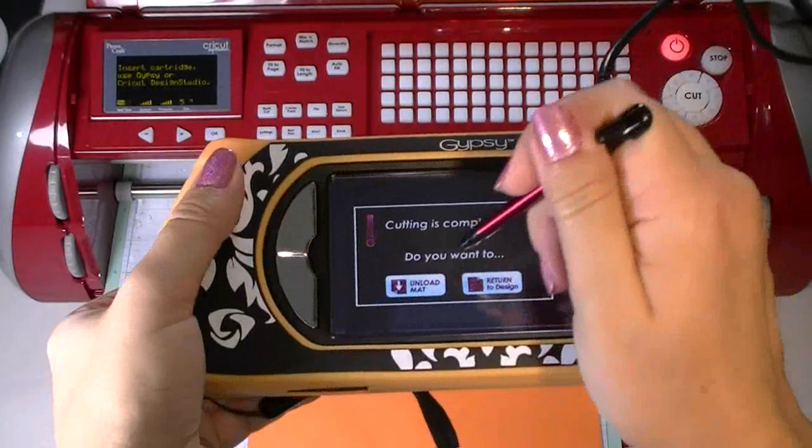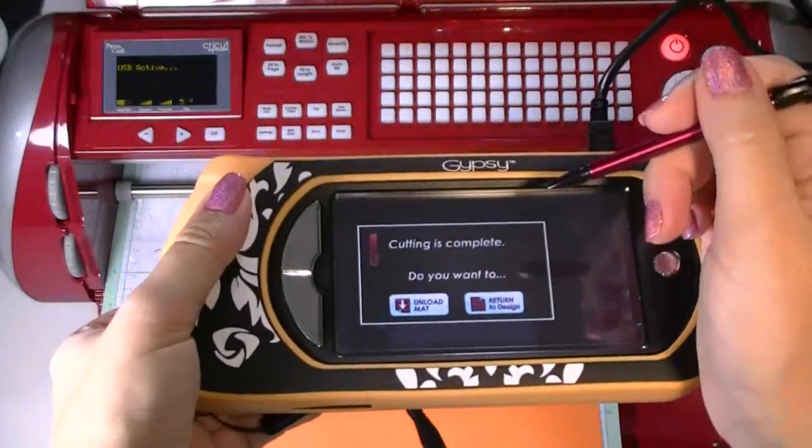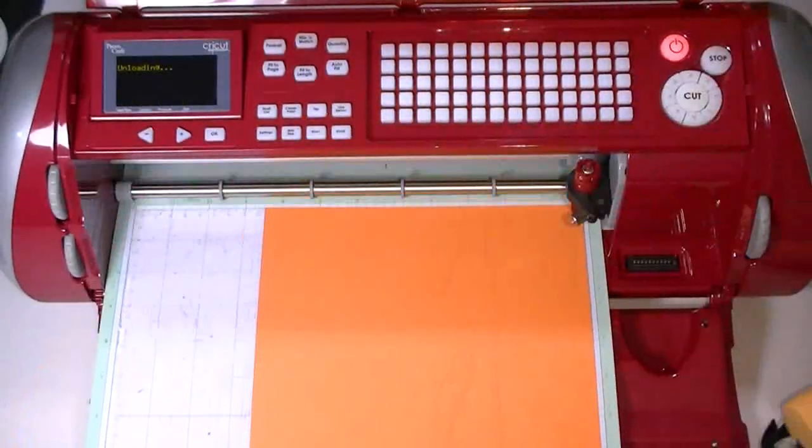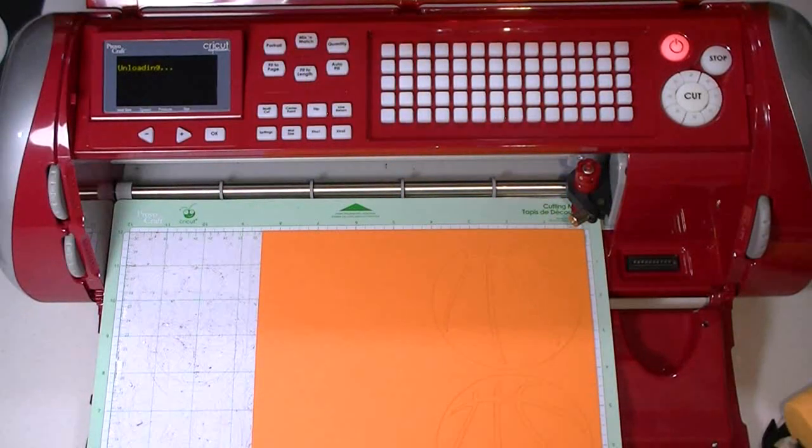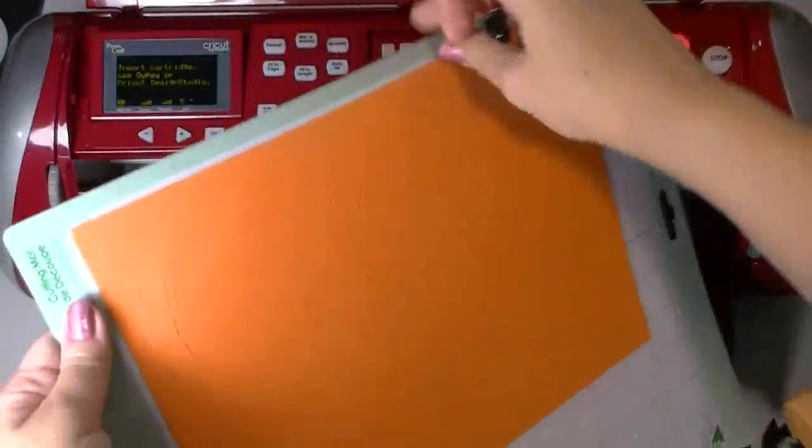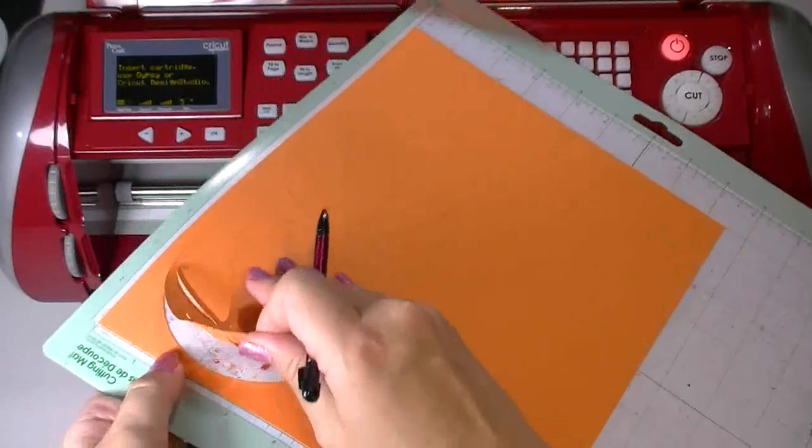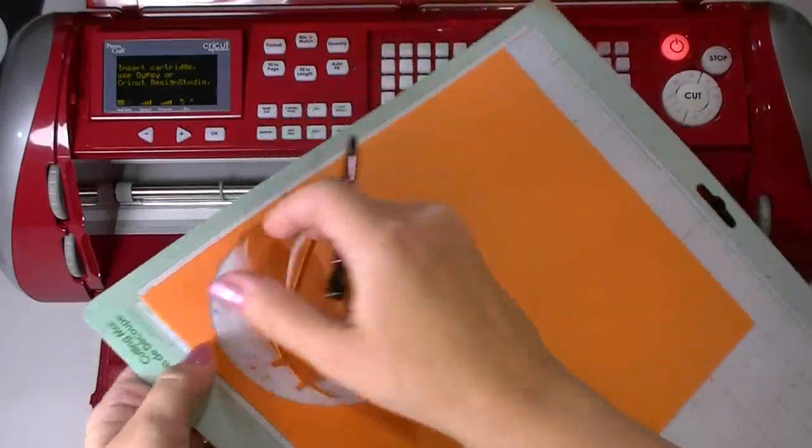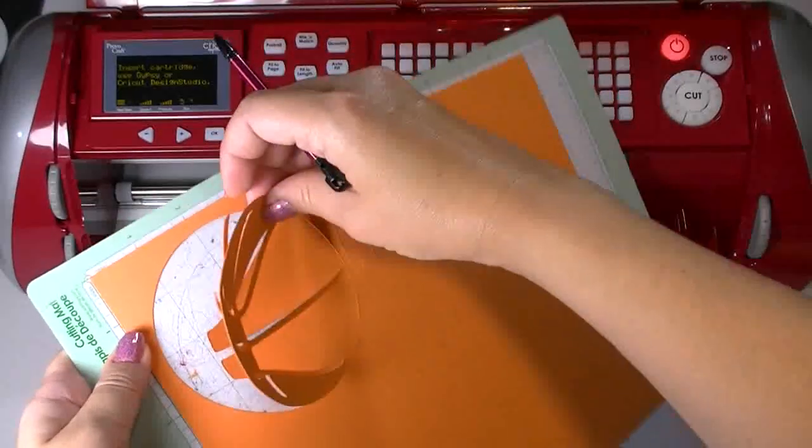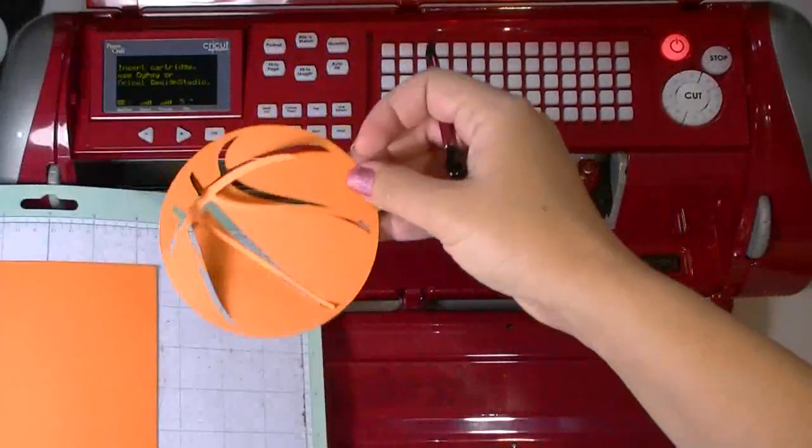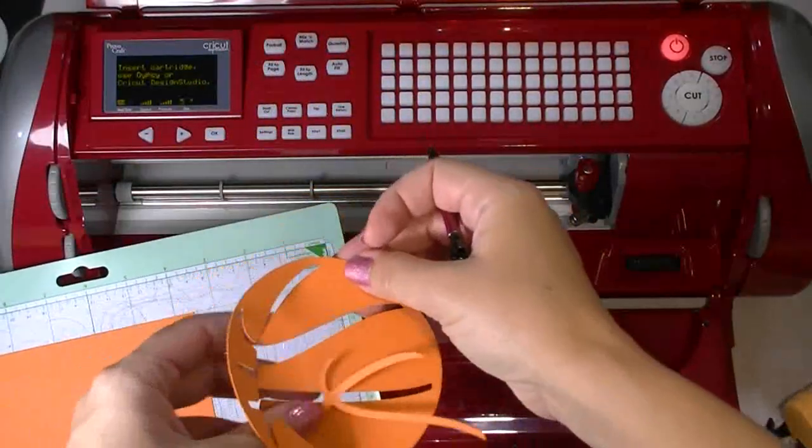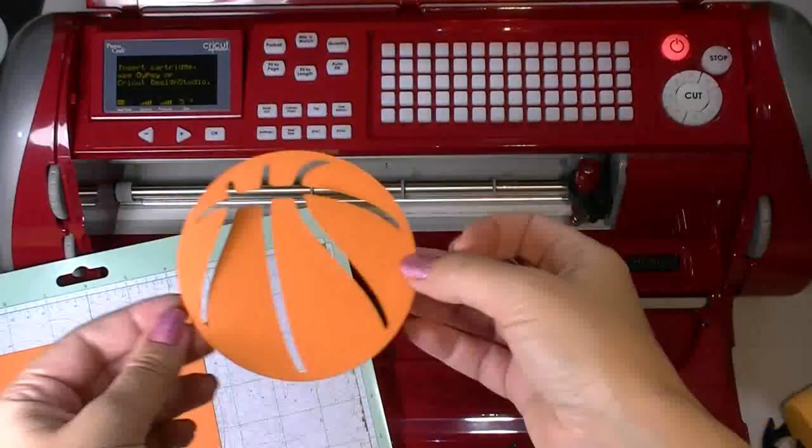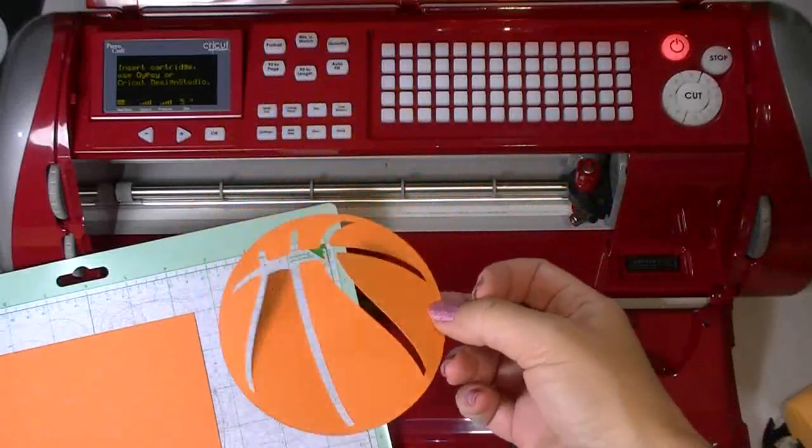We hit unload. It's pretty simple on the Gypsy. Remember, because sometimes even when I'm doing this, I think I need to hit unload on the Cricut. I try to remind myself when I'm using the Gypsy not to worry with the Cricut because everything is controlled by the Gypsy. Gypsy controls everything.